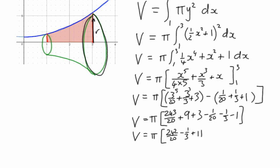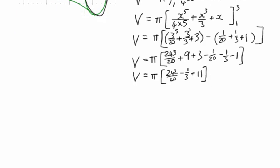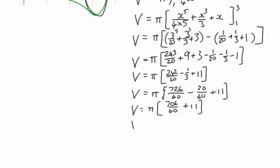You could use your calculator if you want but where's the fun in that. So we've got 242 over 20, we could make that into sixths, we could make that, multiply by three, that would become seven hundred and twenty six sixtieths, minus twenty sixtieths plus eleven, which gives us seven hundred and six sixtieths plus eleven.